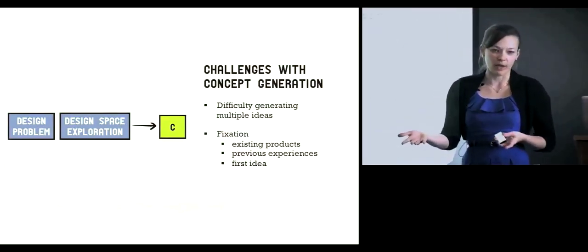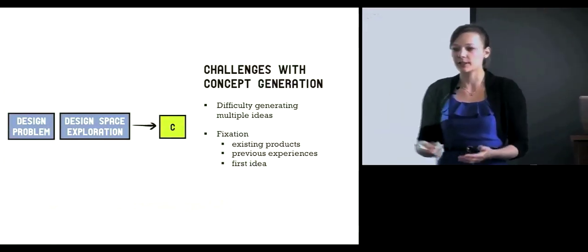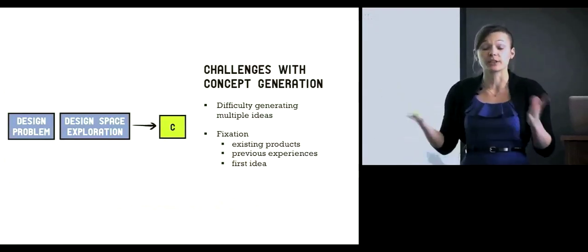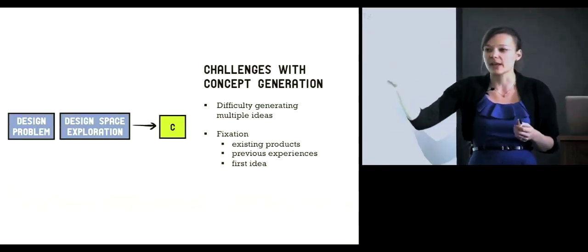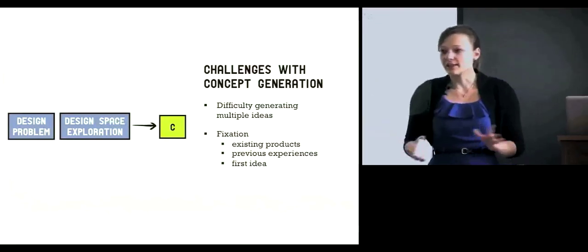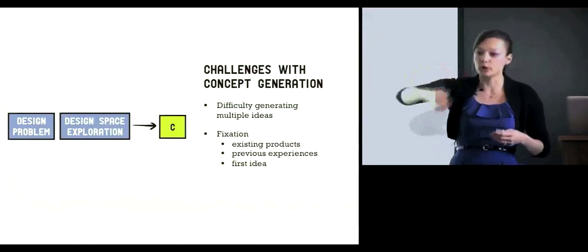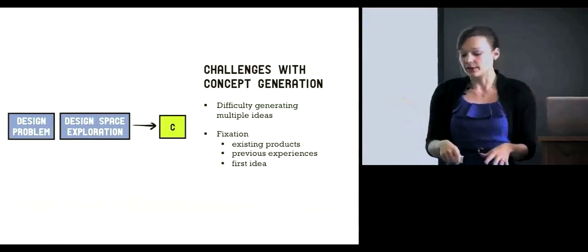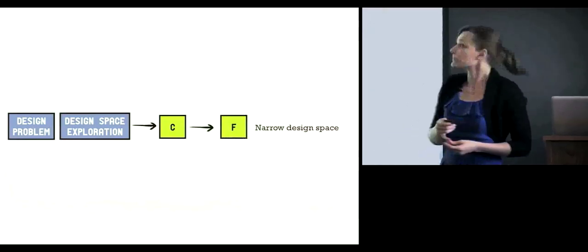The solutions you'd come up with would look a lot like what a pen already looks like — that's a type of fixation. If you've had a similar design experience to what you're currently designing, you'll be fixated on replicating what those past experiences looked like. The third type of fixation, which I see a lot, is a strong attachment to a first idea. Many students think the first idea is the golden ticket to success. Design research says the first idea is not the best — the really great idea doesn't come until idea 55 or 82.